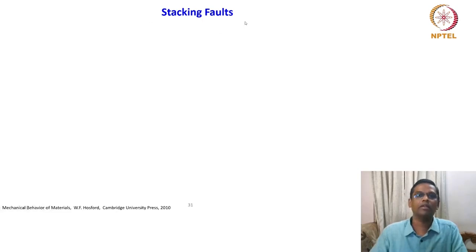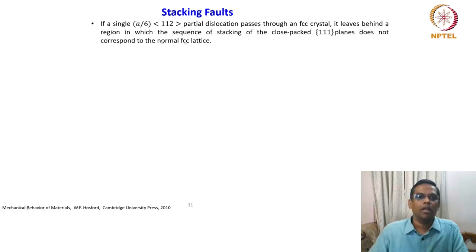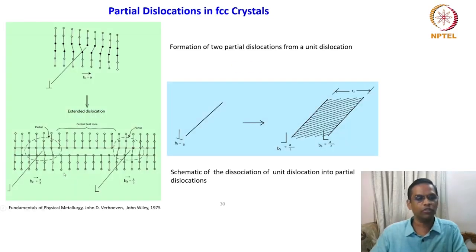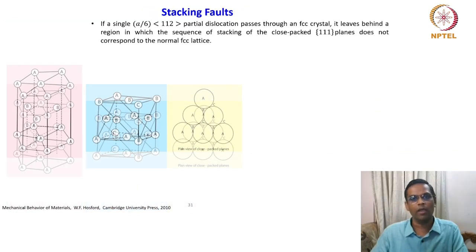There is another important aspect of dislocations called stacking faults. If a single A/6[112] partial dislocation passes through an FCC crystal, it leaves behind a region in which the stacking sequence of the close-packed {111} planes does not correspond to the normal FCC lattice. This is exactly shown here — if we assume a partial dislocation of A/6 passes through, it will create this kind of disturbance and the normal ABCABC sequence of FCC will not be followed.